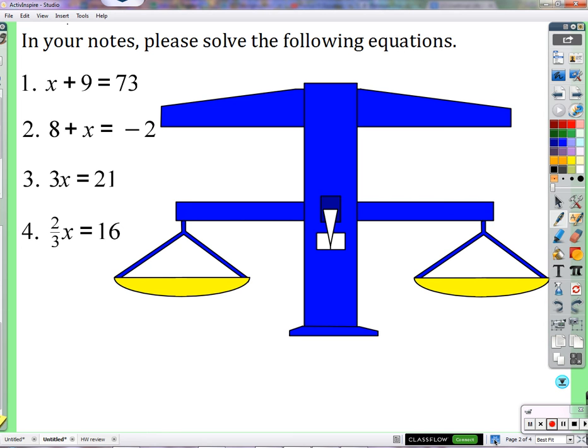Alright, so x plus 9 equals 73. x is just some number that we don't know, right? That's the role that x plays, the unknown amount.